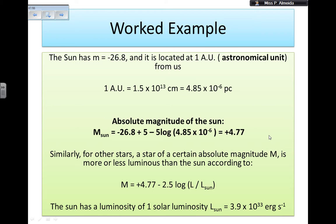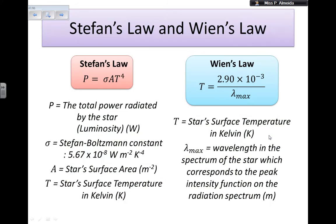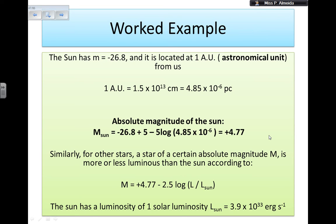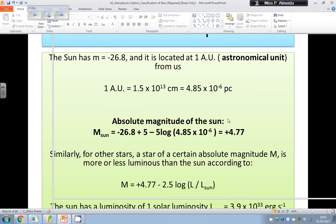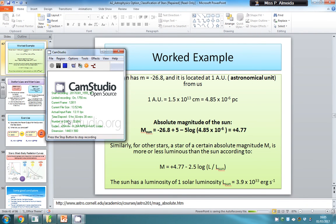I can also relate magnitude with luminosity. The absolute magnitude equals plus 4.77 minus 2.5 times log of the luminosity of the star over the luminosity of the sun, where one solar luminosity is 3.9 × 10³³ ergs per second. So knowing the absolute magnitude from the first formula, I can relate luminosities as well. I'm going to cover these laws in a separate video on absolute magnitudes, luminosities, Stefan's law, and Wien's law. That's the end of this video — take care, bye.